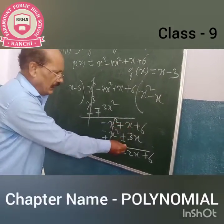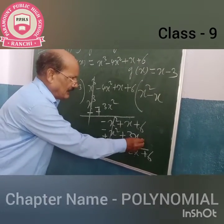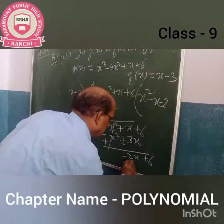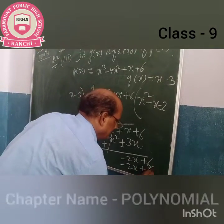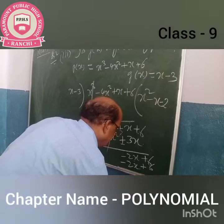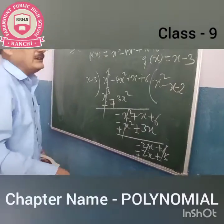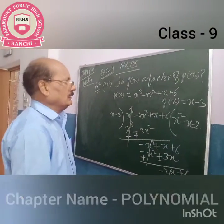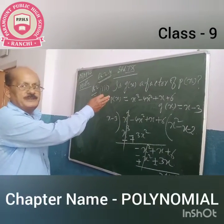x means 1x, and you have to subtract 3x, then it means minus 2x. Minus 2x plus 3x gives plus 6. Then you have to confirm that yes, G(x) is the factor of D(x).